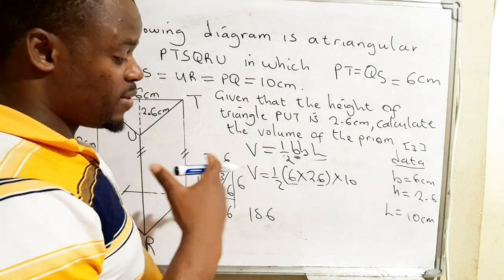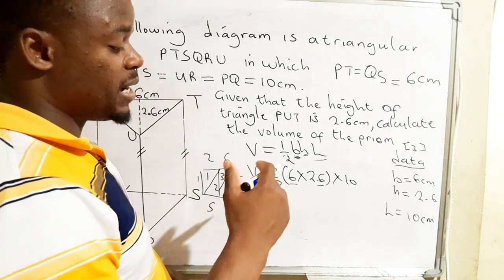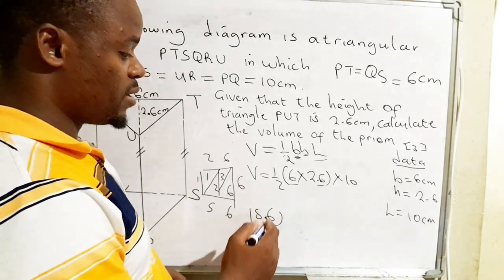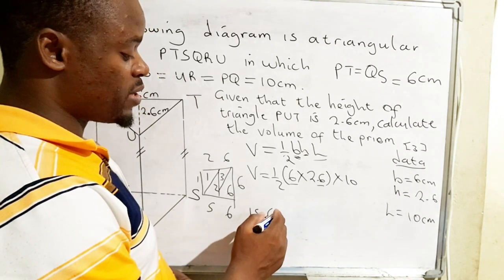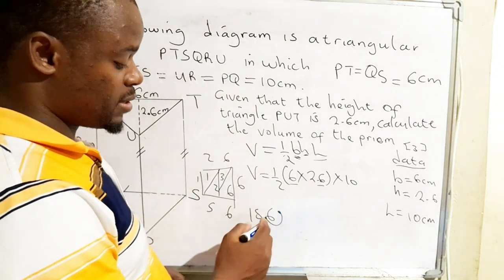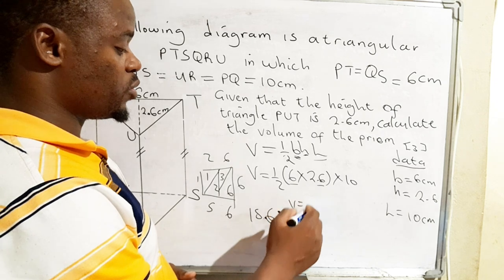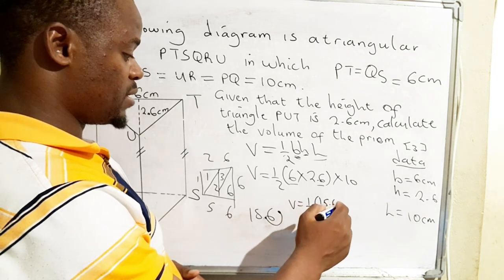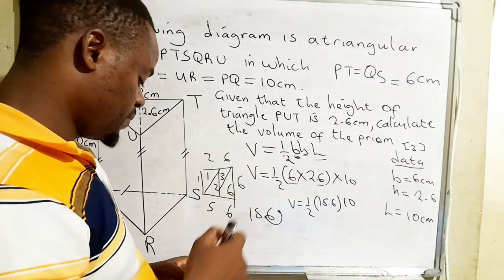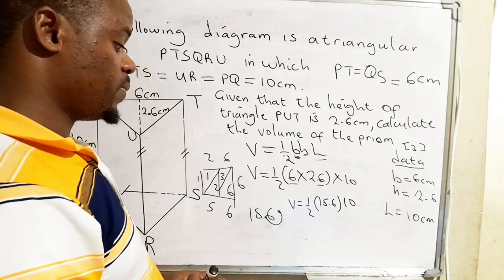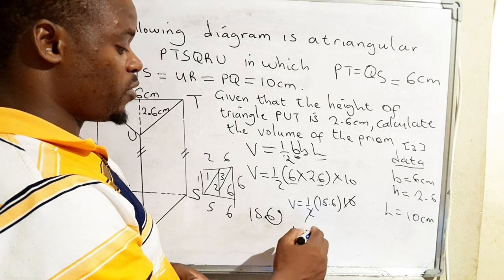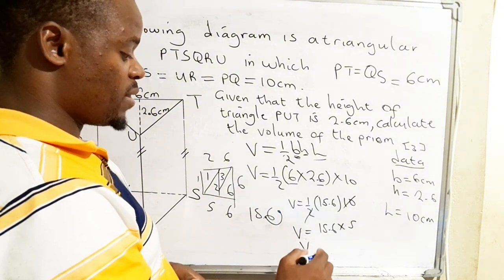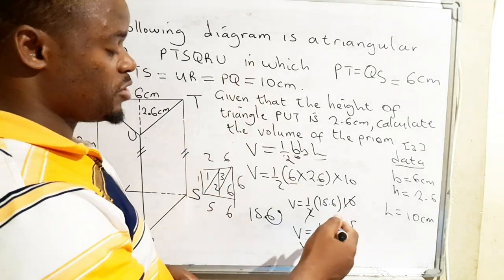But remember that when we were multiplying out those numbers, there's one number which had a decimal point. So what we do is we consider this decimal point, we will actually take it that the decimal point is at the 5, and since we have 1 decimal place, it will be here. So we're going to have volume which is equal to half times 15.6 times 10. Volume is equal to 15.6 times 5. We can use the lattice method again just to find the answer.